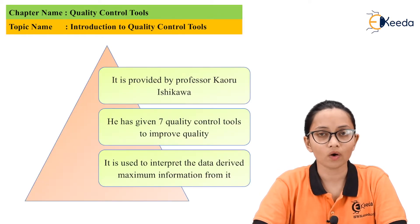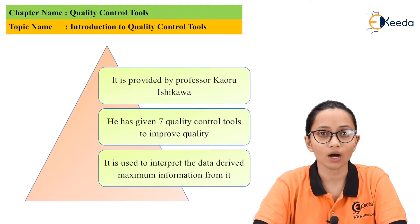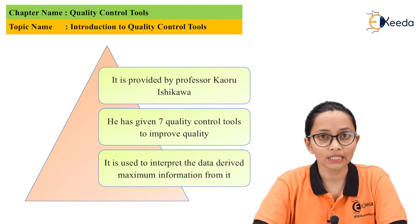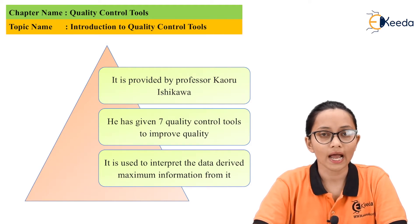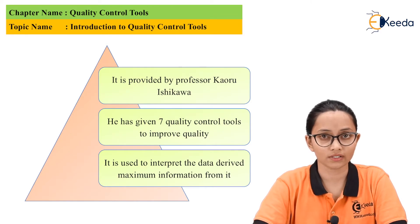Quality tools could be used by organizations and individuals to interpret the data and derive maximum information from it. When we do business, we get some data during the manufacturing about the defects produced out of the total items produced. This data can be used to get conclusive results about quality and where we need to focus to get maximum productivity and profits. That's why quality control tools are essential for the quality of products and improvement of services.